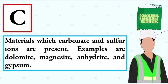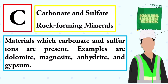Materials in which carbonate and sulfur ions are present. Examples are dolomite, magnesite, anhydrate, and gypsum. The answer is carbonate and sulfate rock forming minerals.